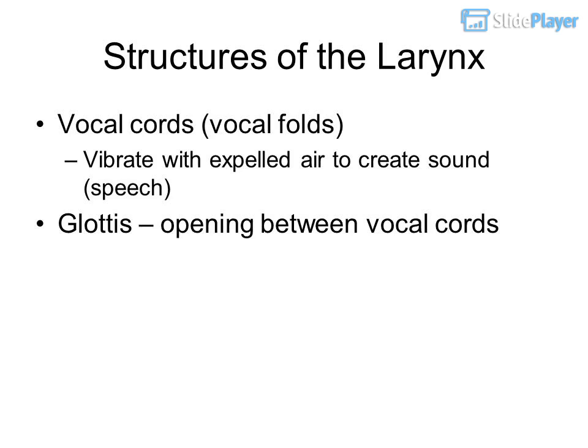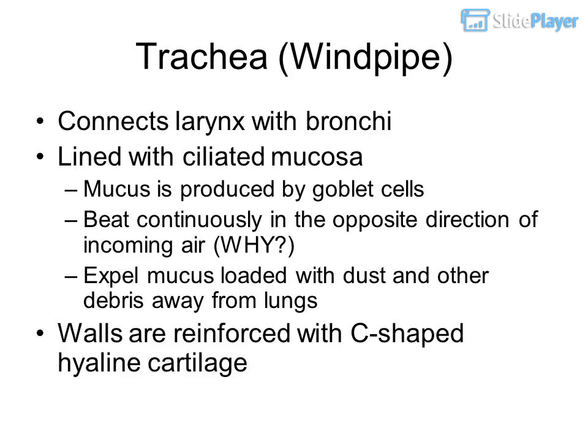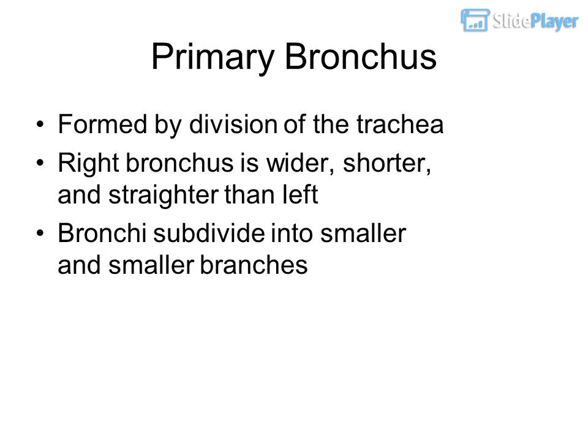Vocal cords, or vocal folds, vibrate with expelled air to create sound and speech. The glottis is the opening between the vocal cords. The trachea, or windpipe, connects the larynx with the bronchi. It is lined with ciliated mucosa; mucus is produced by goblet cells that beat continuously in the opposite direction of incoming air to expel mucus loaded with dust and other debris away from the lungs. The walls are reinforced with C-shaped hyaline cartilage.